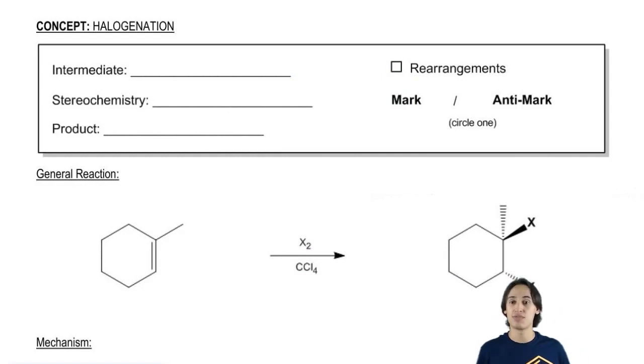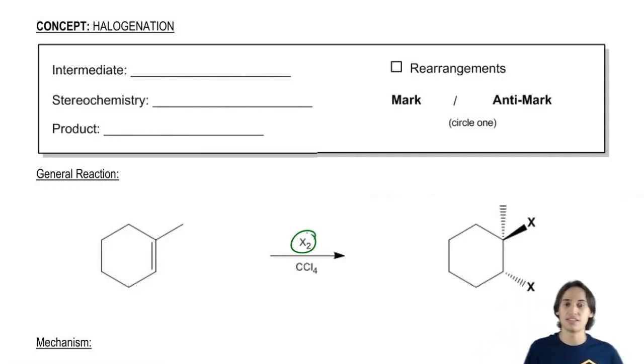Halogenation is the process of taking a double bond and adding a diatomic halogen, and at the end what we're going to get is anti-dihalides, or anti-vicinal dihalides.